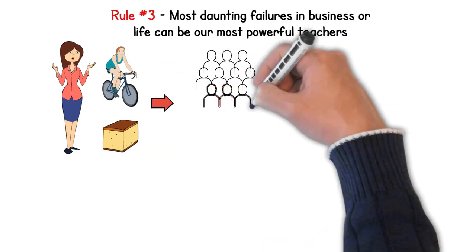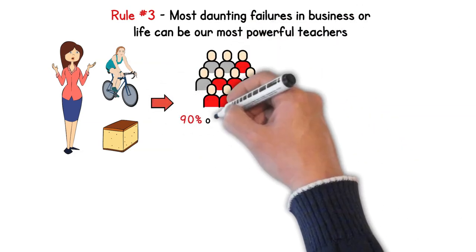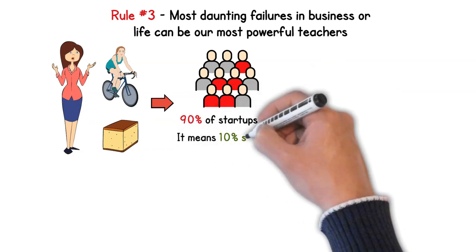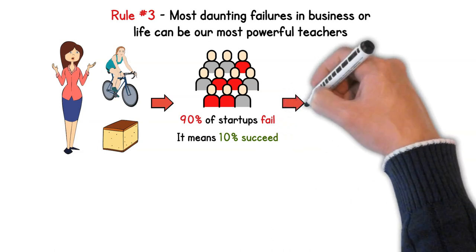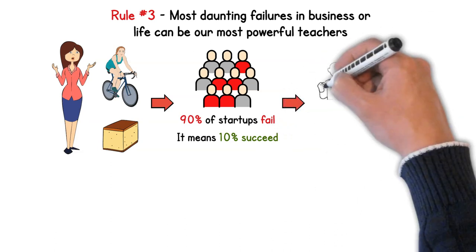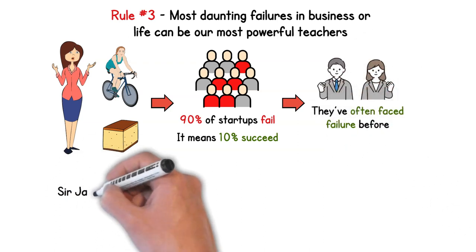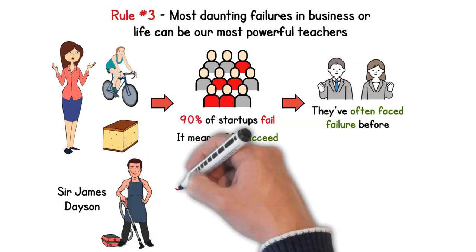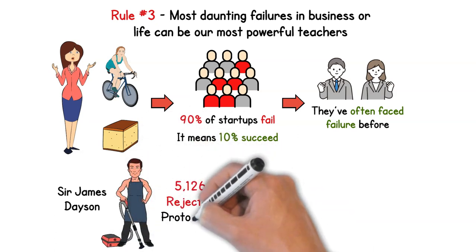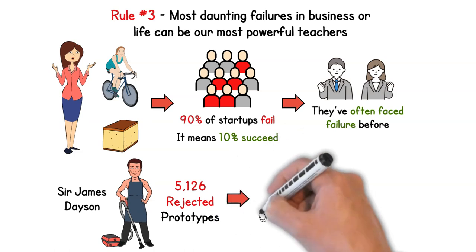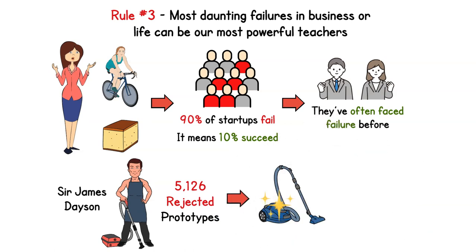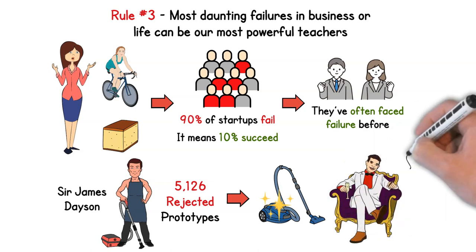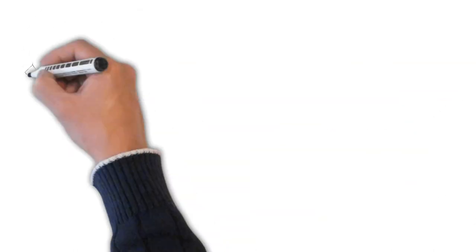Let's talk numbers for a sec. Did you know that 90% of startups fail? Yeah, that's a pretty daunting number. It means 10% succeed. And guess what's a common thread among many in that 10%? They've often faced failure before, sometimes more than once. Sir James Dyson, you know the Dyson vacuum guy? He went through a hopping 5,126 prototypes and faced countless rejections before perfecting his iconic vacuum. Now Dyson isn't just about vacuums, it's a multi-billion-dollar empire spanning various tech products.